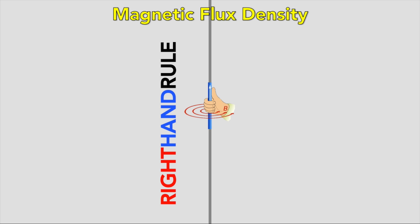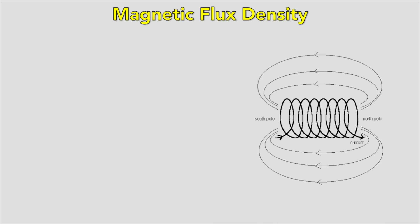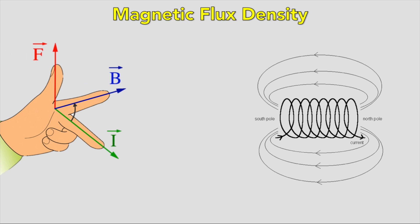Many coils, called a solenoid, form a field like a bar magnet. Putting a current-carrying wire into an external magnetic field will cause the fields to interact. If the current is parallel to the field lines, then no force will act, as it's all down to components. The force is always perpendicular to the current and the magnetic field, as shown using Fleming's left-hand rule.